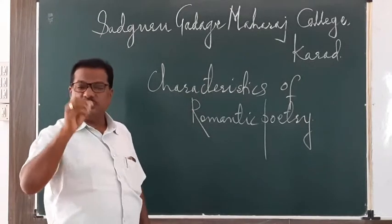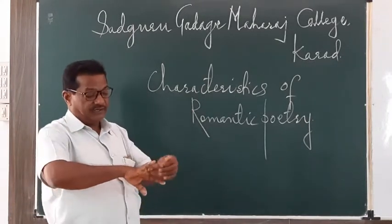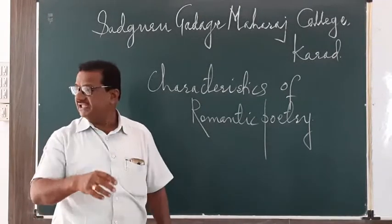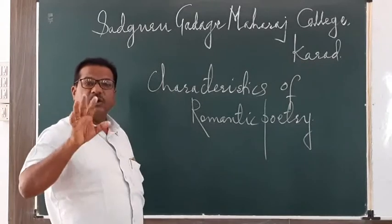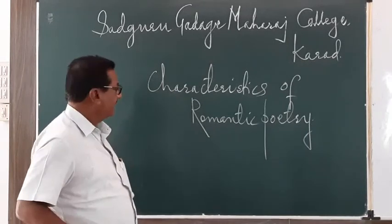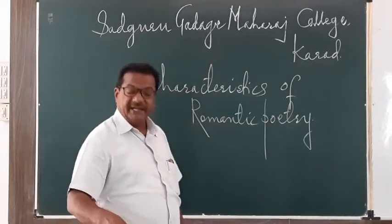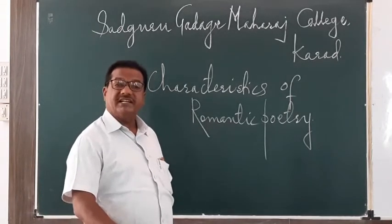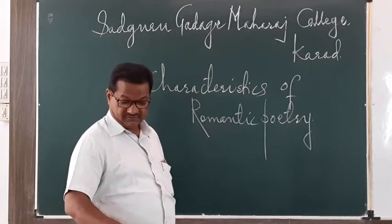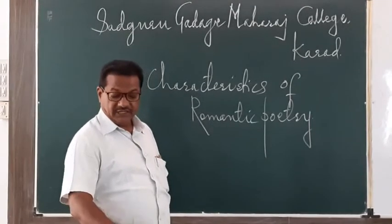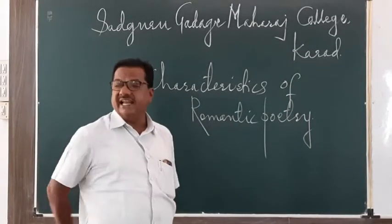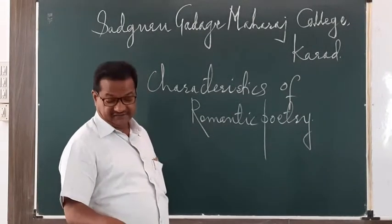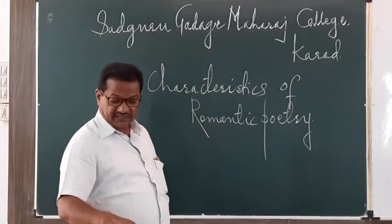To understand romantic poetry, we need to study it in contrast with neoclassical poetry of the 18th century. Romantic poetry can better be understood in contrast with neoclassical poetry of the Augustan age — also called the poetry of the age of prose and reason.